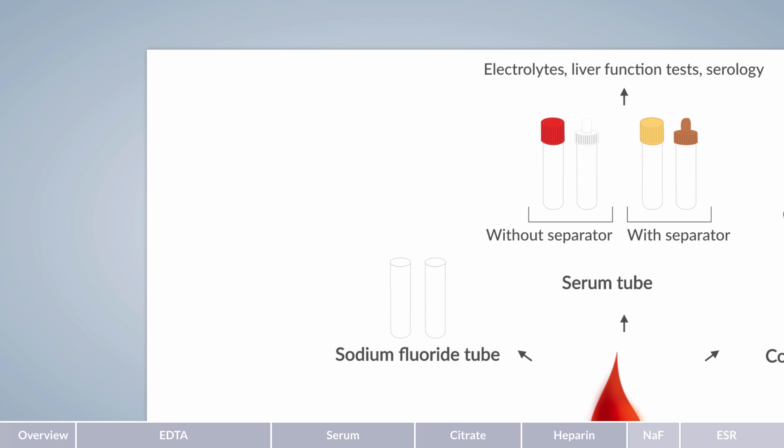The sodium fluoride tube has a gray cap in accordance with the international standard and a yellow cap in accordance with the European standard. It's used to determine glucose or lactate levels in blood. To accurately measure blood glucose levels, glycolysis in red blood cells must be inhibited. Otherwise, measured glucose levels will be too low and lactate levels too high.